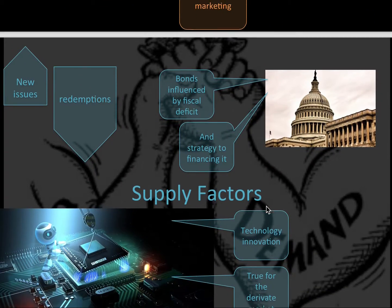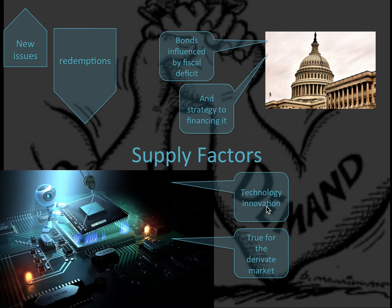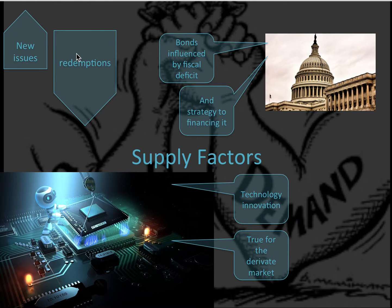We also have supply factors. For example, with bonds — if the government needs money and issues a whole bunch of bonds, this is going to flood the market and increase the supply. If that supply is not met by an equal increase in demand, it's going to alter the price and bring it down. The exact opposite happens if the government starts redeeming bonds, reducing the supply — and if there isn't a corresponding reduction in demand, that's going to cause the price to increase.